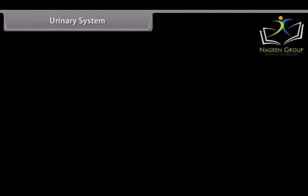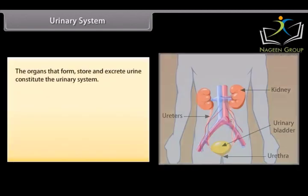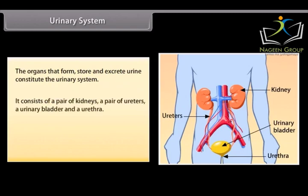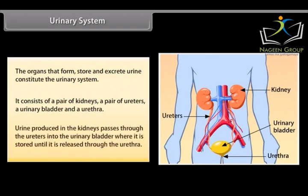Urinary system: The organs that form, store, and excrete urine constitute the urinary system. It consists of a pair of kidneys, a pair of ureters, a urinary bladder, and a urethra. Urine produced in the kidneys passes through the ureters into the urinary bladder, where it is stored until it is released through the urethra.